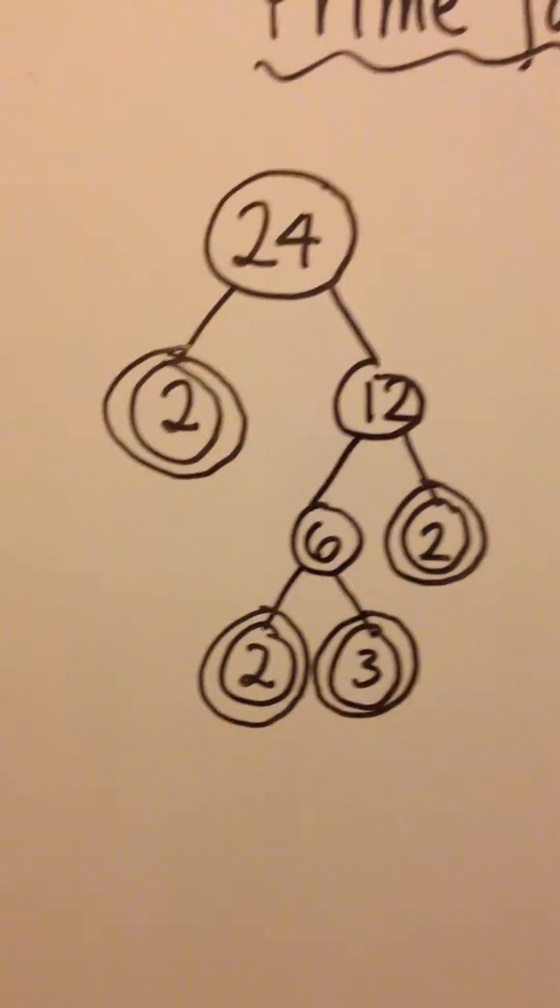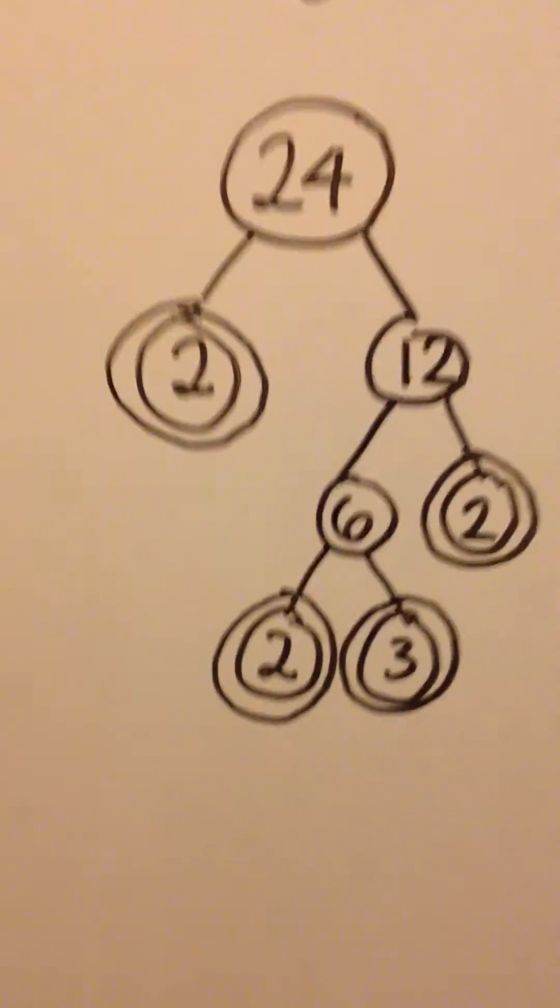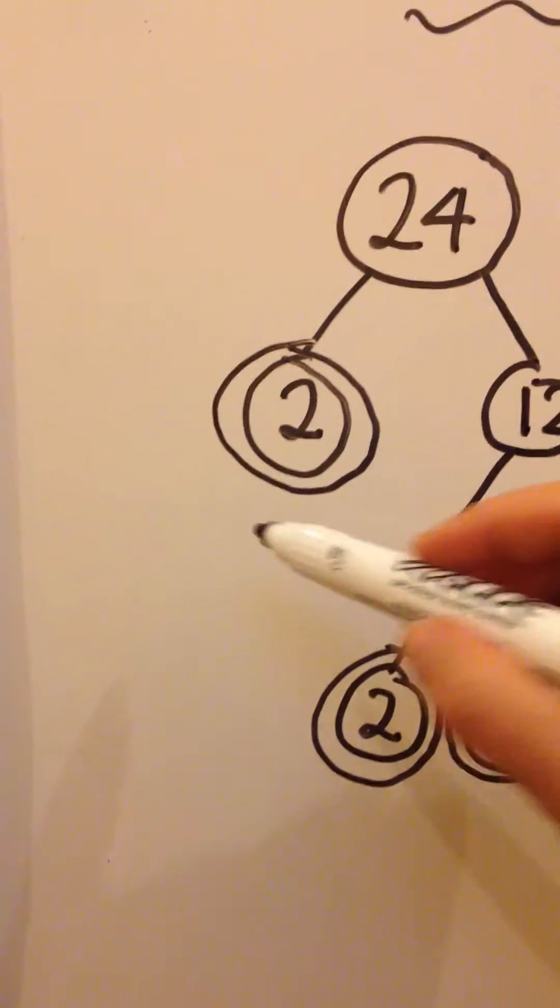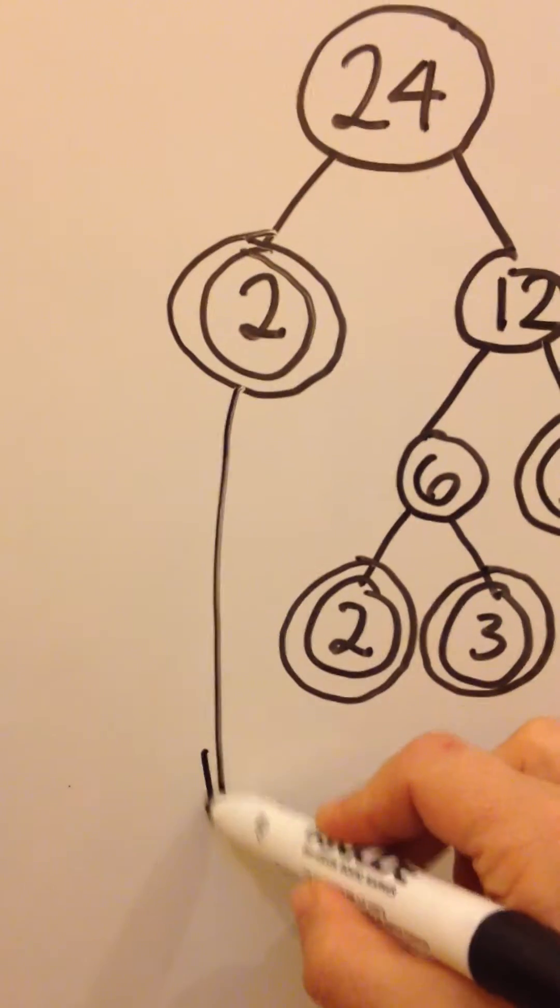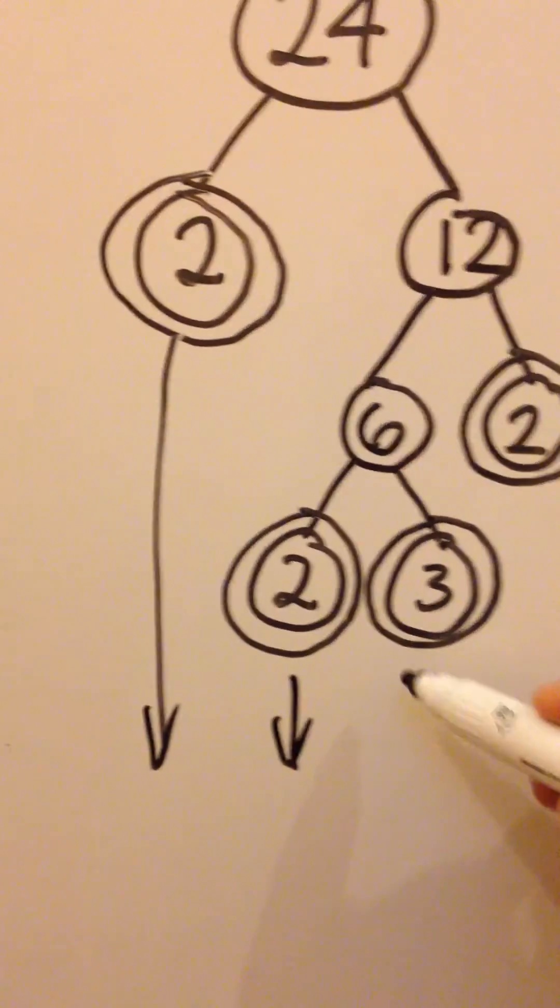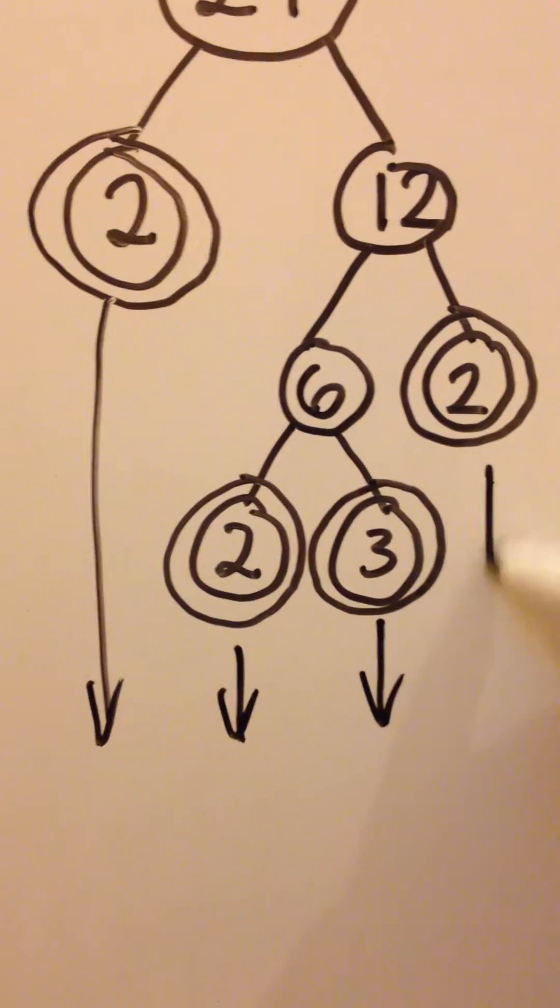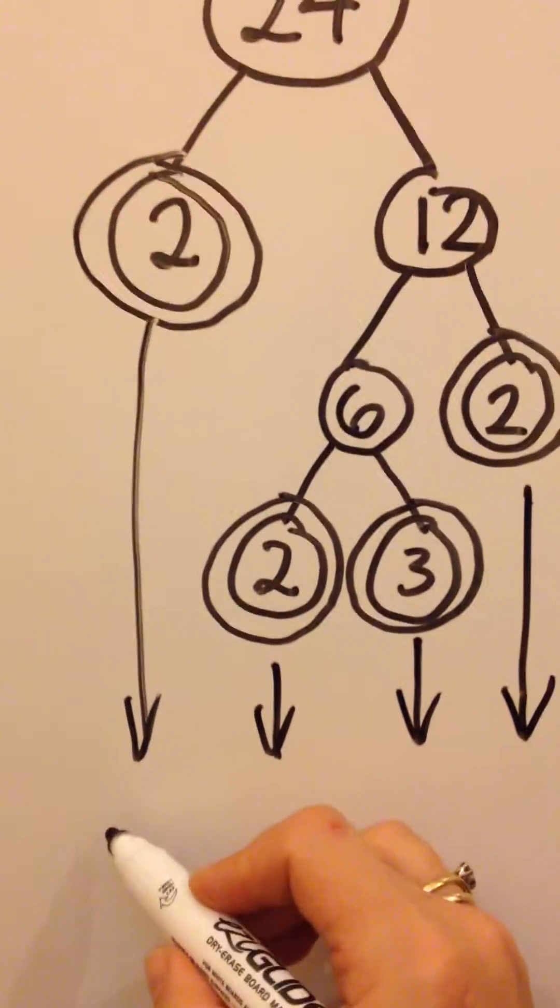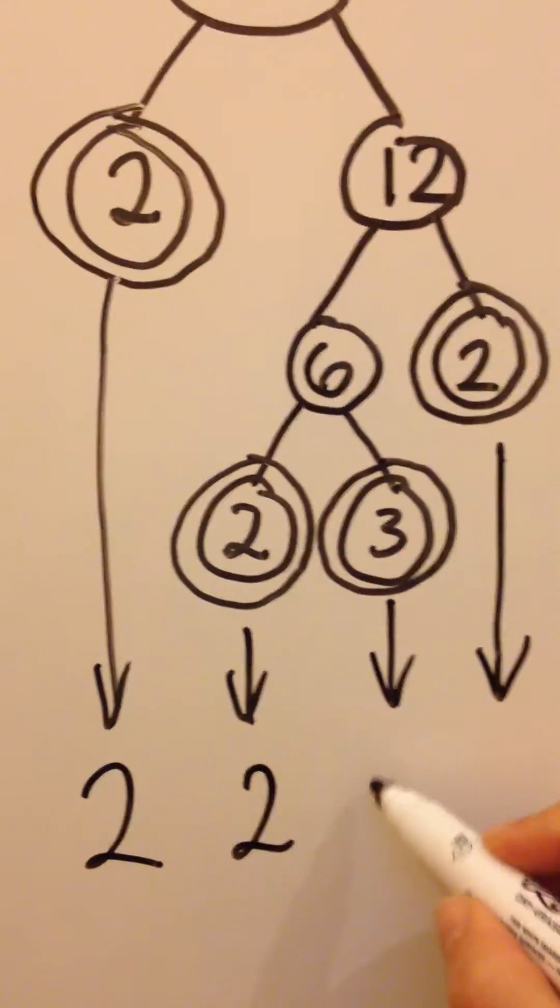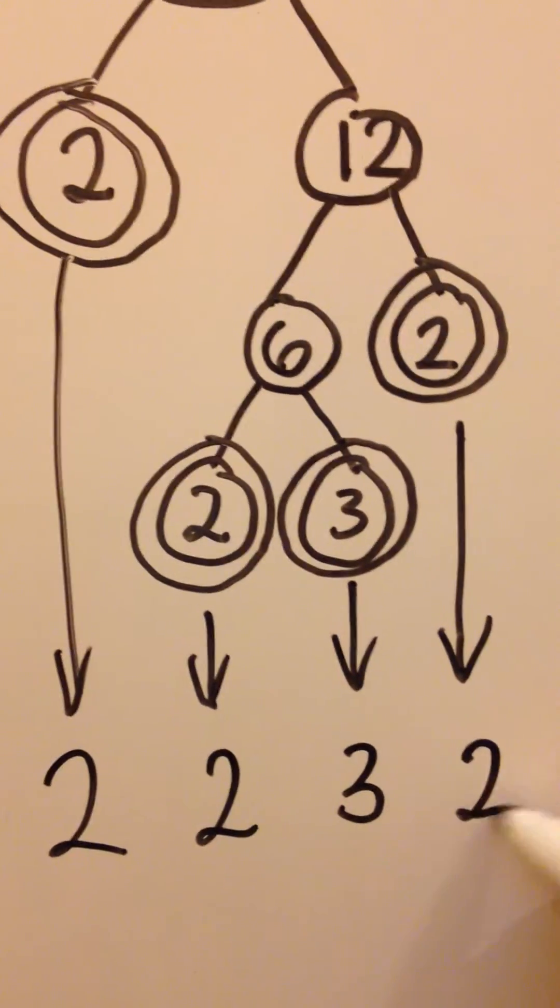Okay, there's a way of showing that these prime factors multiply back up to make 24. Let's bring them down with arrows. Okay, 2, 2, 3, 2.